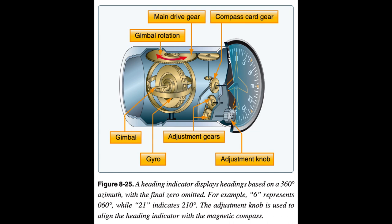Among other factors, the amount of drift depends largely upon the condition of the instrument. If the bearings are worn, dirty, or improperly lubricated, the drift may be excessive. Another error in the heading indicator is caused by the fact that the gyro is oriented in space and the Earth rotates in space at a rate of 15 degrees per hour. Thus, discounting precession caused by friction, the heading indicator may indicate as much as 15 degrees error per hour of operation. Some heading indicators referred to as horizontal situation indicators (HSI) receive a magnetic north reference from a magnetic slaving transmitter and generally need no adjustment. The magnetic slaving transmitter is called a magnetometer.